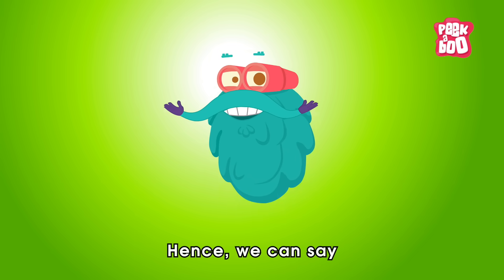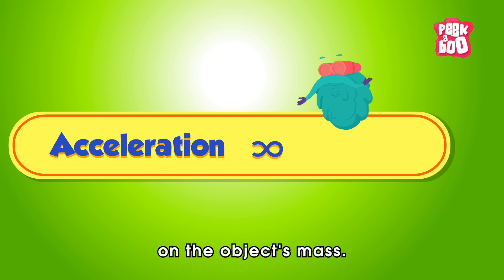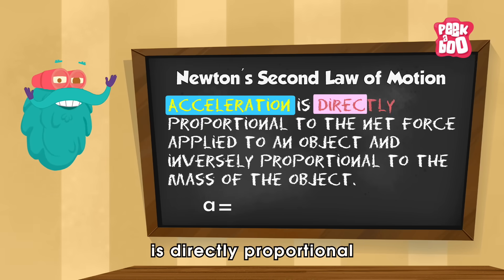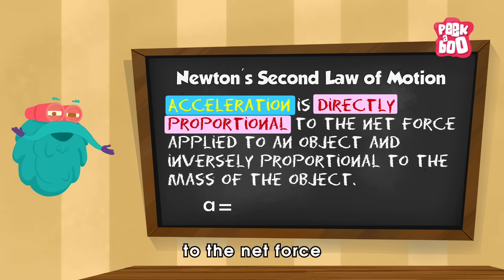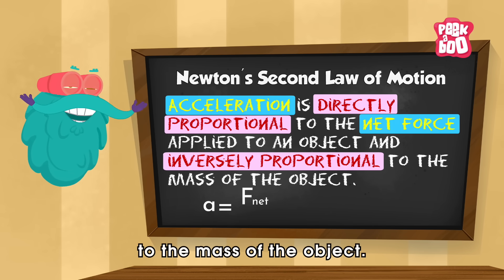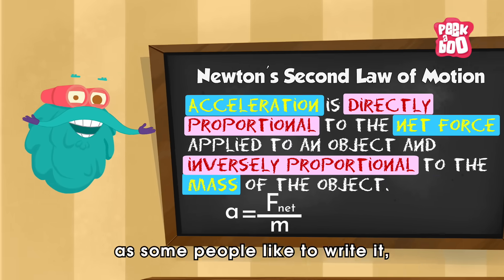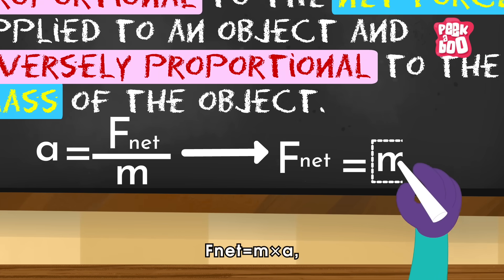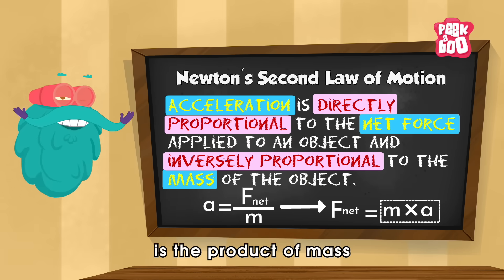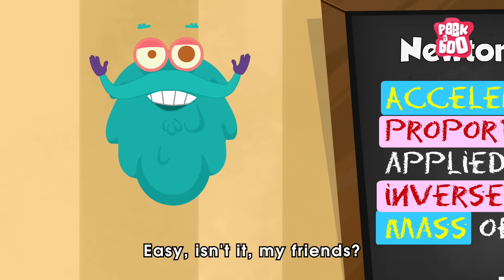Hence, we can say that acceleration depends inversely on the object's mass. To conclude, acceleration is directly proportional to the net force applied to an object and inversely proportional to the mass of the object. Or, as some people like to write it: F net equals M into A, which means that the net force is the product of mass and acceleration. Easy, isn't it, my friends?